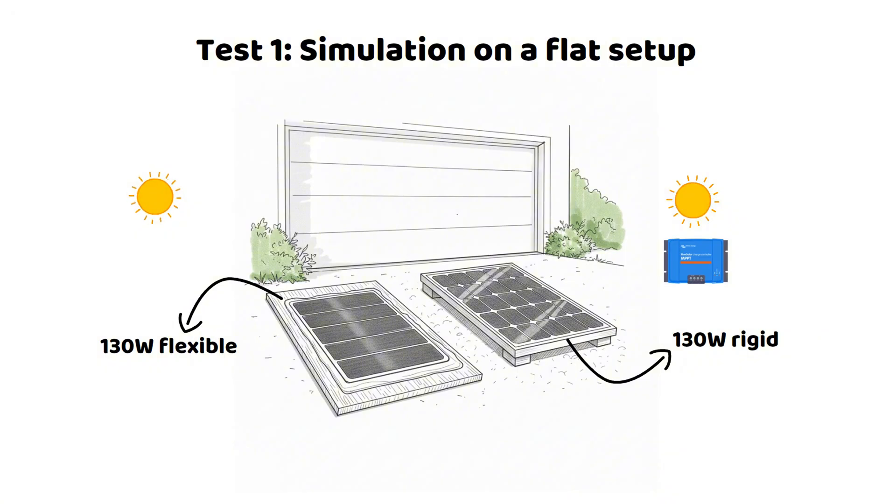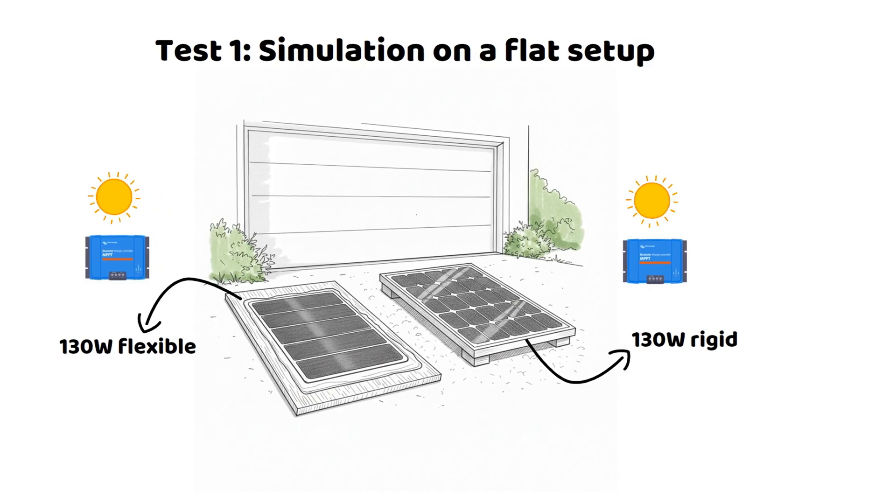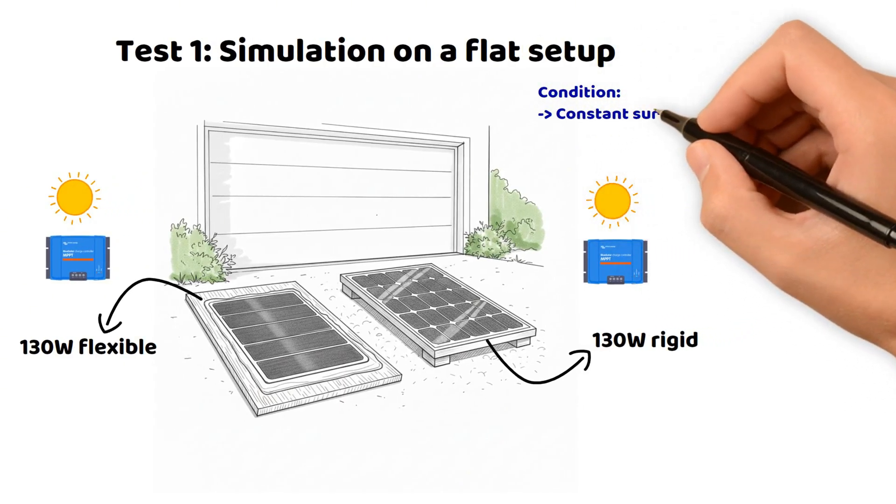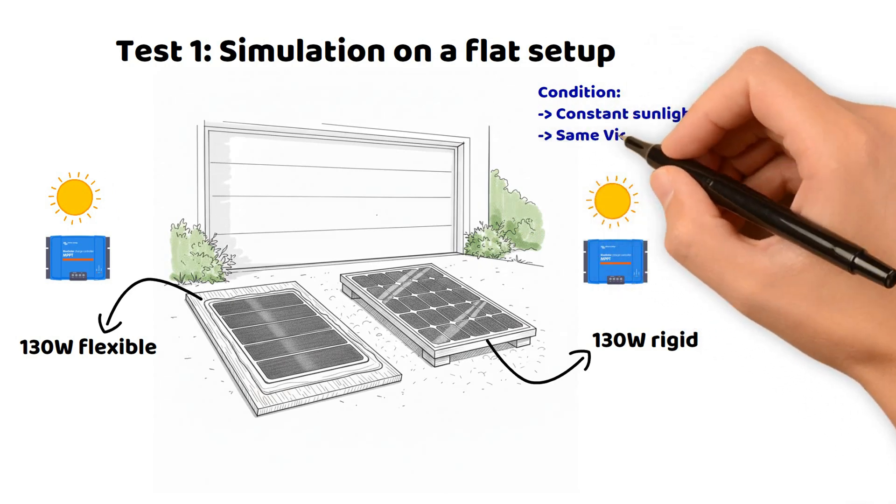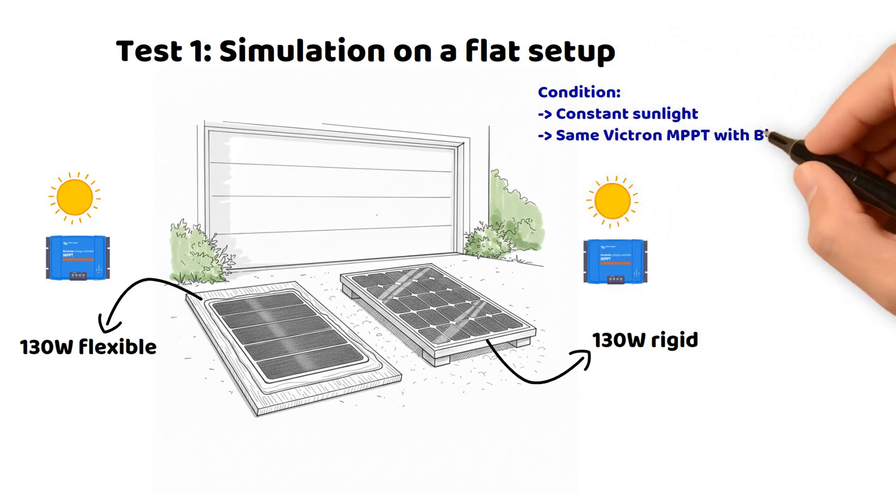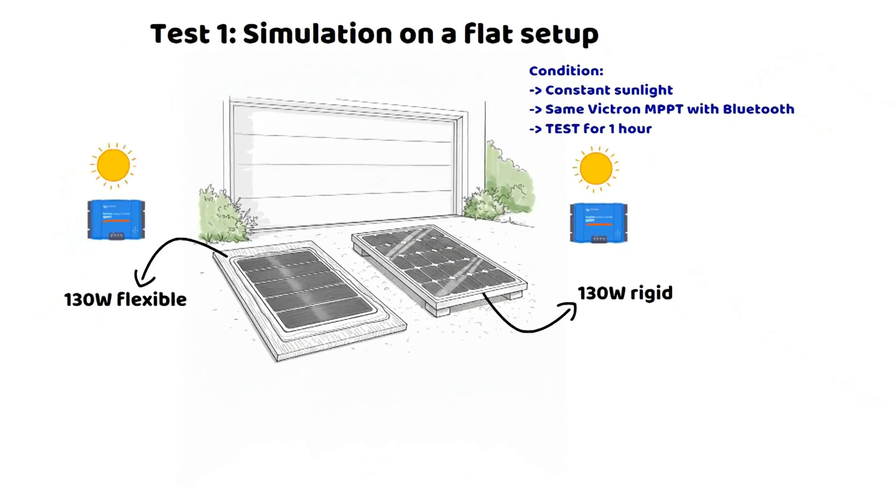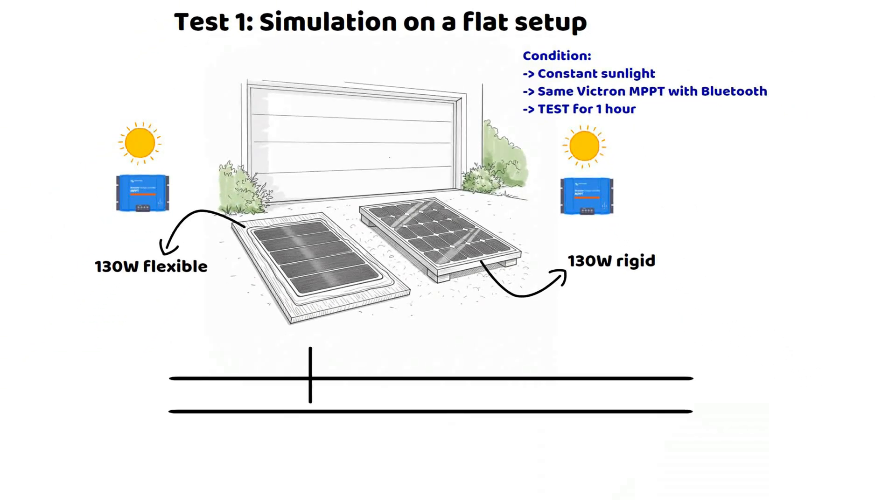As for the test conditions, it was of course a sunny day. Both panels were tested with the same MPPT charge controller, a Victron model with Bluetooth that allowed me to monitor the production in real time. The flexible panel was taped to a wooden board and the rigid panel was placed on wooden battens to simulate mounting on supports two centimeters high, each panel produced for one hour.